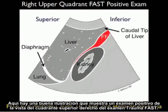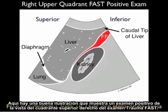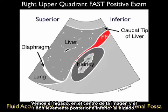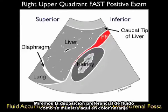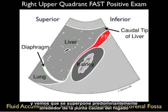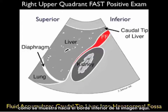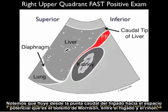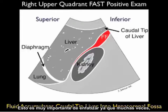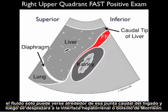Here's an illustration showing a positive examination from the right upper quadrant view of the trauma FAST exam. We see the liver in the middle of the image and the kidney slightly posterior and inferior to the liver. Looking at the preferential deposition of fluid shown in orange, it layers out predominantly around the caudal tip of the liver. Notice that it flows from the caudal tip into the potential space of Morrison's pouch between the liver and kidney. Fresh fluid can often only be seen around that caudal tip before moving into the hepatorenal interface.